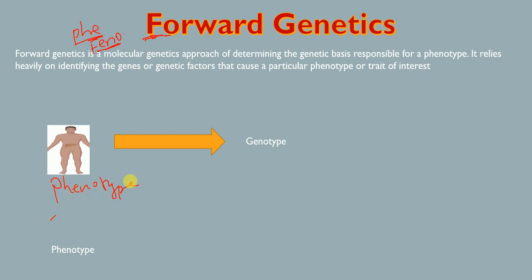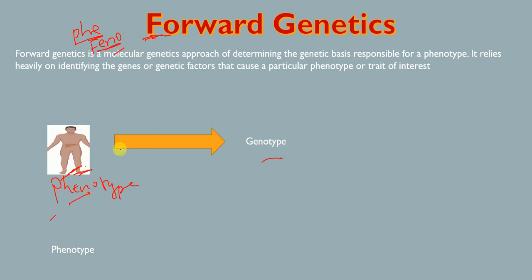For example, if an individual is obese, we first look at the phenotype and then map it to the genotype. We want to identify the gene or genetic factors responsible for that particular phenotype. So forward genetics always starts with the phenotype, and then we determine the genetic basis responsible for it.